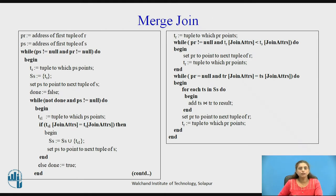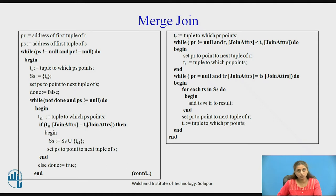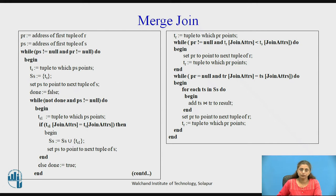Let us look at the algorithm for how merge join works. It is assumed that both relations are sorted on the common attributes on which we are performing the join operation. PR and PS are pointers to the first tuple of relations R and S. This will execute the join operation until we reach the end of the file or end of relation. We have to read all the tuples pointed by PS — that is, all tuples from S having the same value for the common attribute.